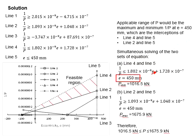Substitute e into the equations. You are able to determine the P. The P_minimum is found to be 1016.5 kN, and then you find the intersections of line 2 and line 5, based on these two equations.